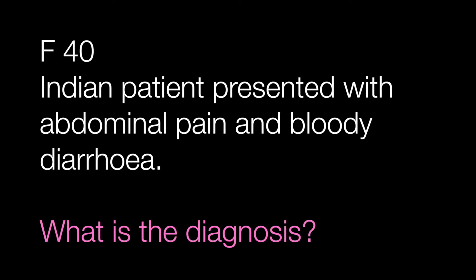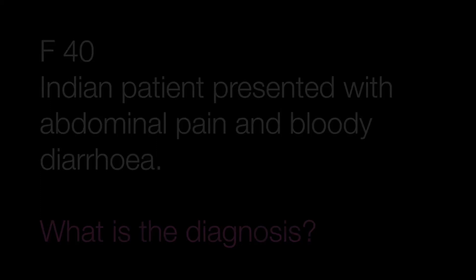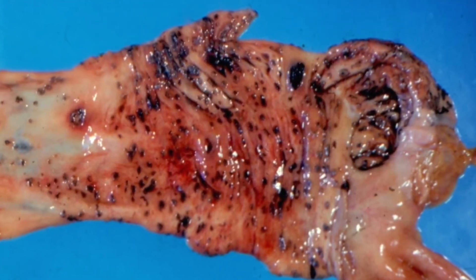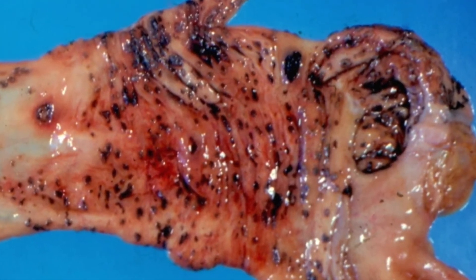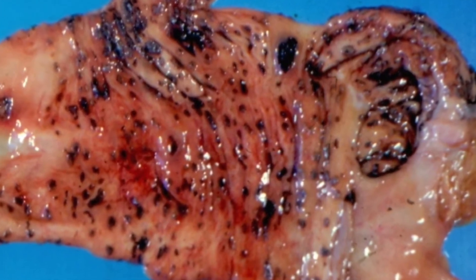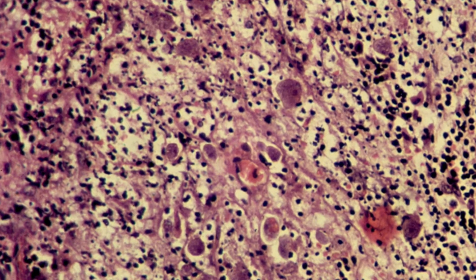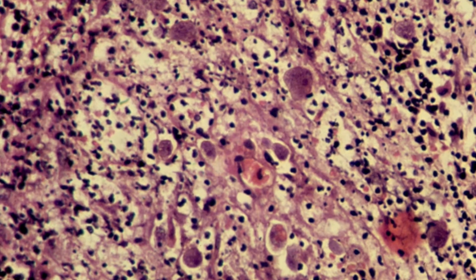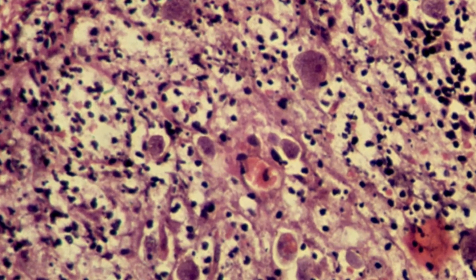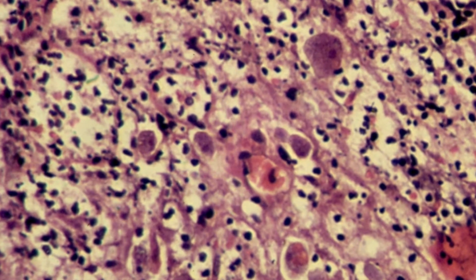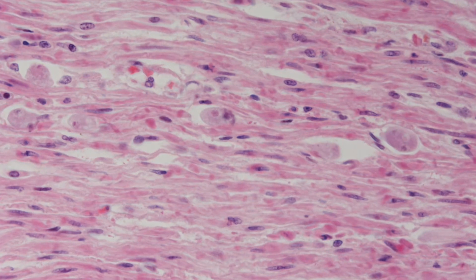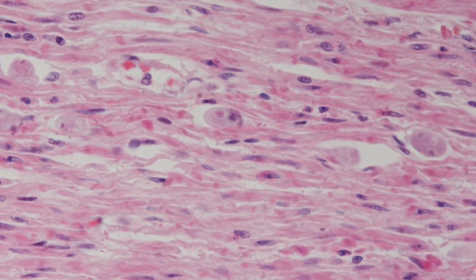Case number two is part of a large bowel resection from a female of 40 who was Indian and presented with abdominal pain and bloody diarrhoea. What is the diagnosis? This is the gross appearance of the large bowel. This is the exudate on the mucosal surface and this is a section of the bowel wall.